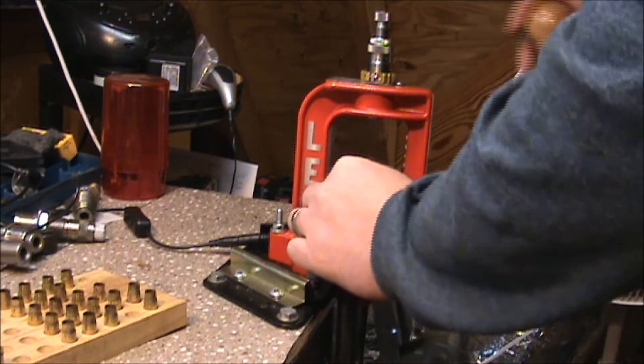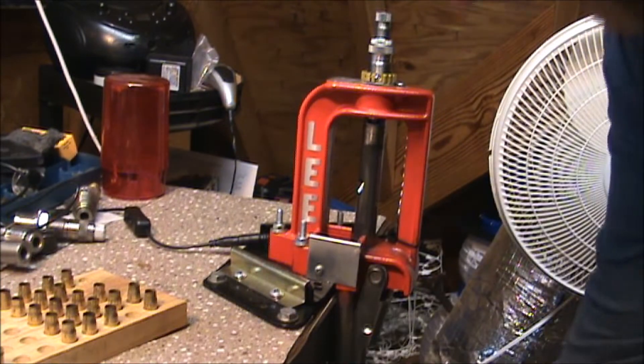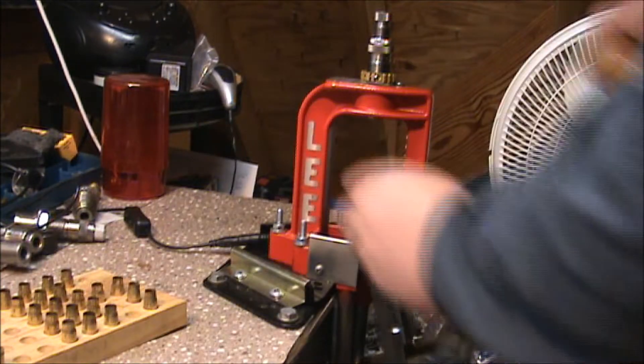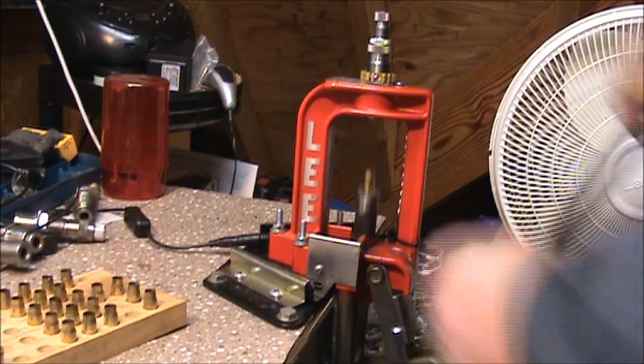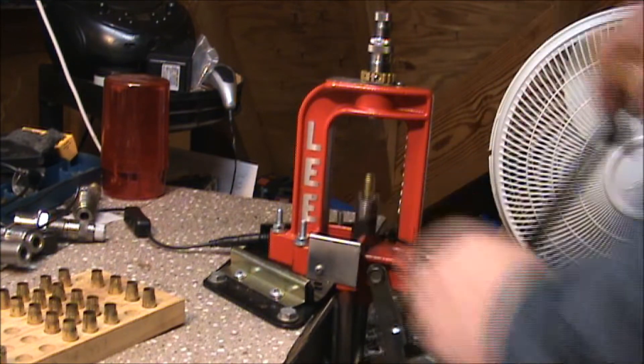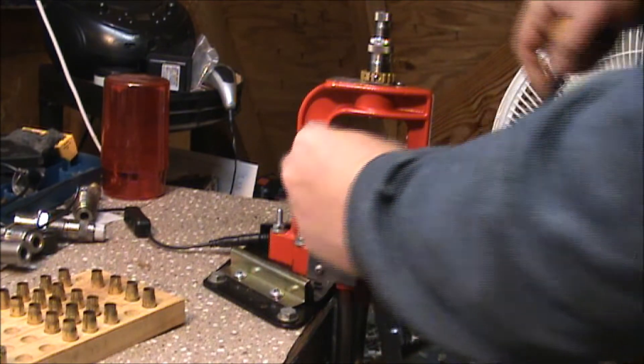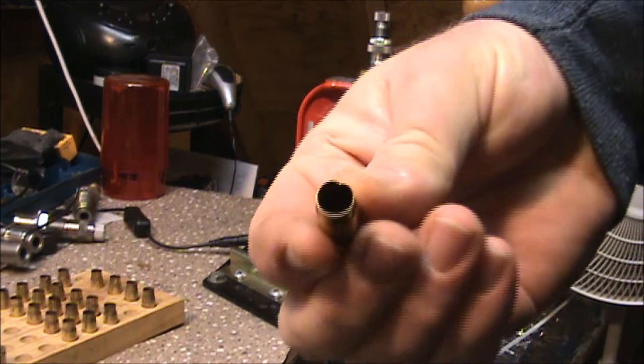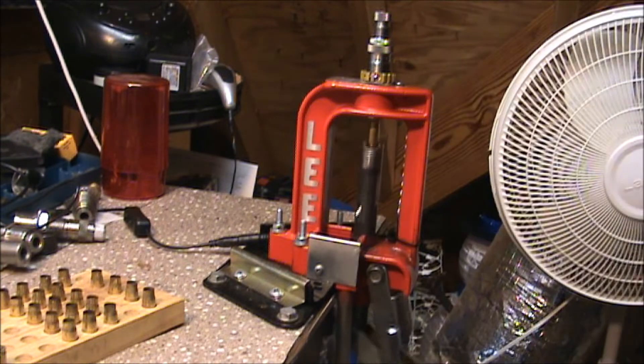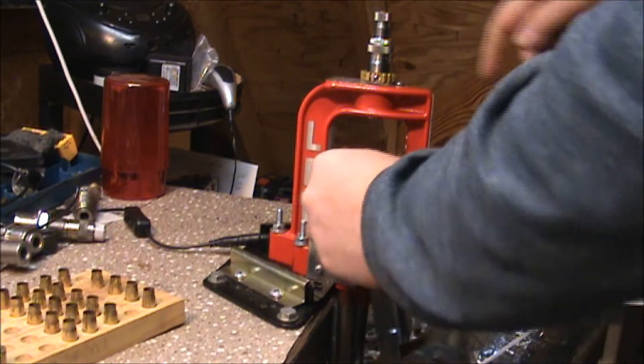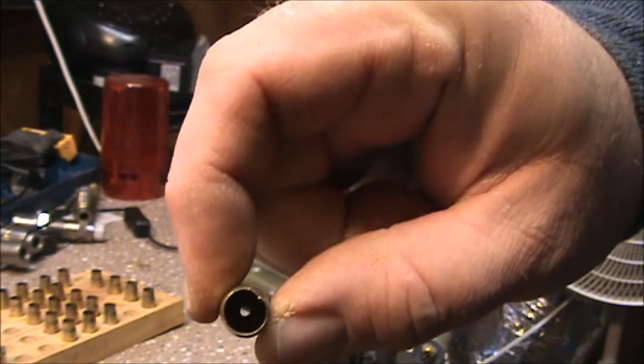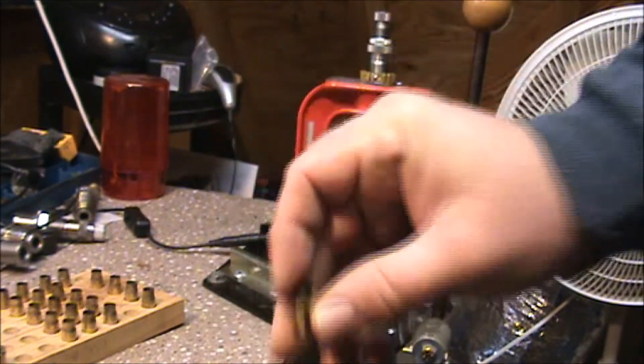That's pretty much it, just go through and resize them all. Especially this one you see here, this one's mouth is kind of dinged up a little bit. Should be no problem running through the sizing die, knocks that right back out. And then the flaring die will take out the rest of it.